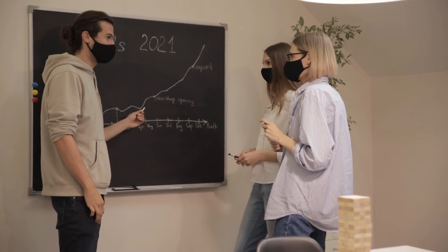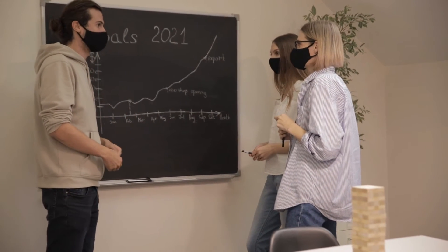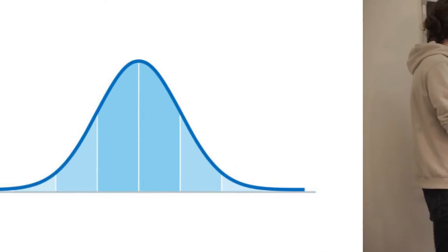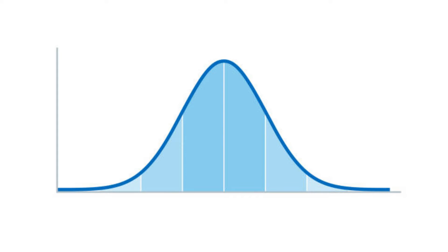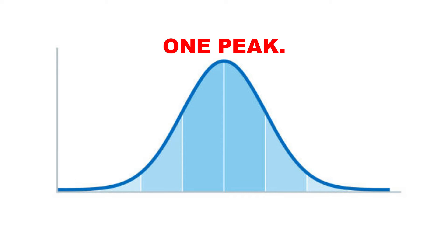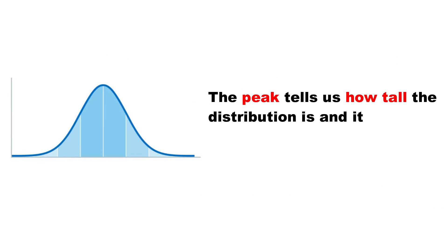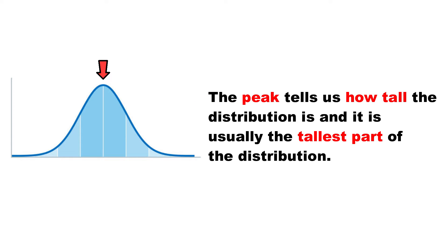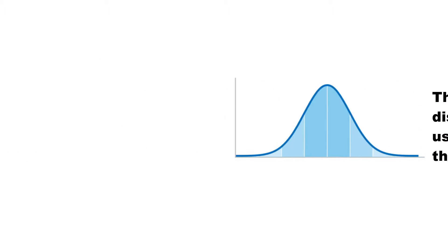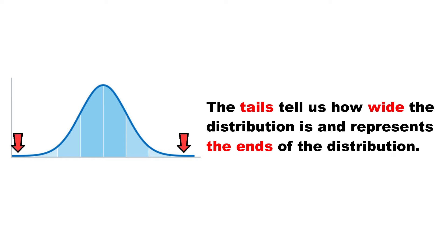Here is a normal distribution, and we can see that we have what we call a peak and what we call tails. From this diagram we have one peak and we have two tails. The peak actually tells us how tall the distribution is — it is the tallest part of the distribution — while the tail tells us how wide our distribution is, and it is actually the ends of the distribution.